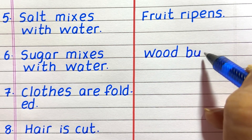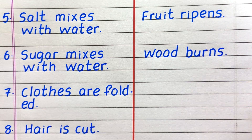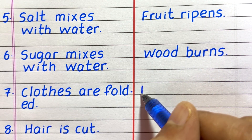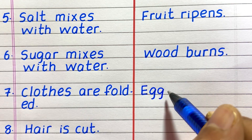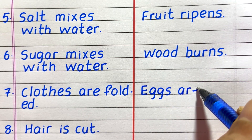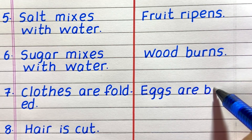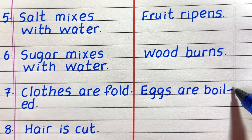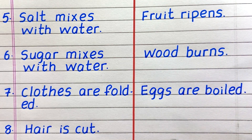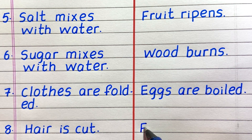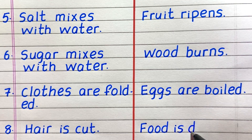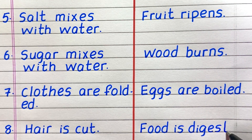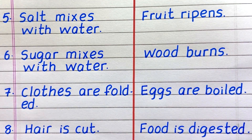Sixth example of a chemical change is wood burns. Eighth, food is digested.